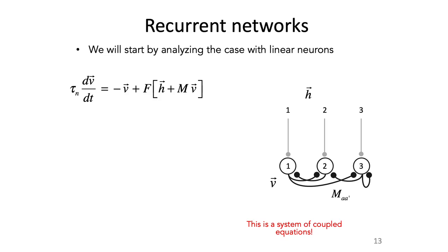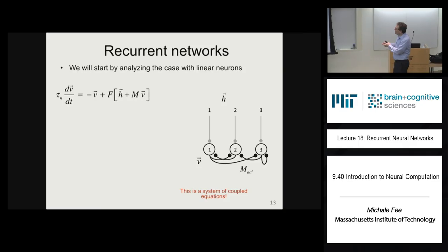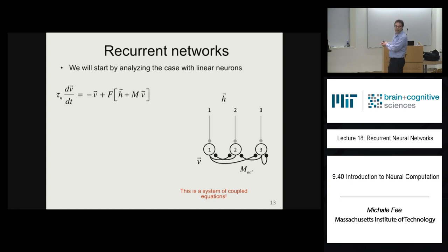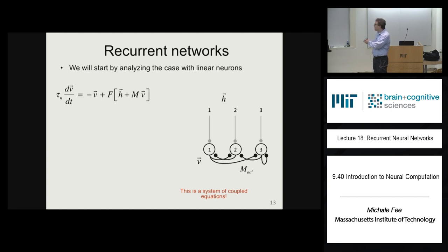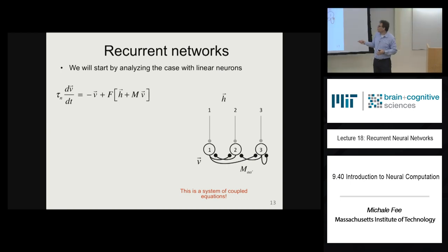This is a system of coupled equations. The time derivative of the firing rate of the first neuron is given by a contribution from the input layer and a contribution from other neurons in the output layer. The time rate of change of each neuron depends on the activity in all the other neurons in the network — that's a set of coupled equations whose solution is not obvious when you look at it.